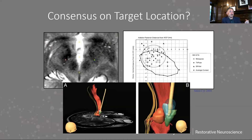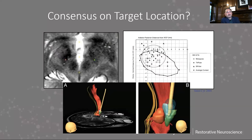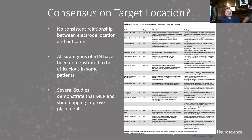You can go from stimulating the fields of Forel to stimulating cerebellar thalamic fibers, and it doesn't take much to do that. For that reason, I think of that as the mechanism that makes microelectrode recording and intraoperative stimulation mapping so important — you really don't know, even if you had two patients with exactly the same MRI scan, that you would get exactly the same effects even if you put the electrode in precisely the same spot. This has been demonstrated in a number of studies.